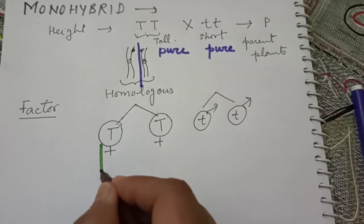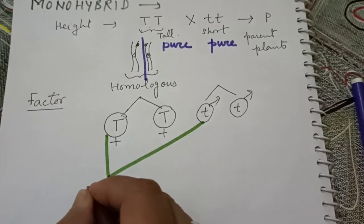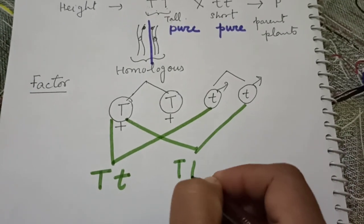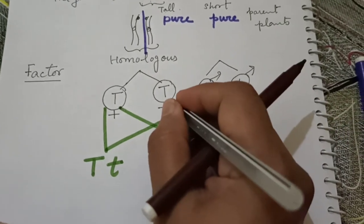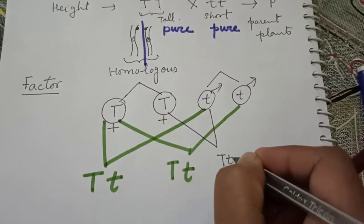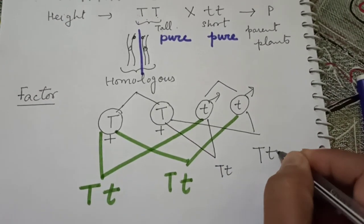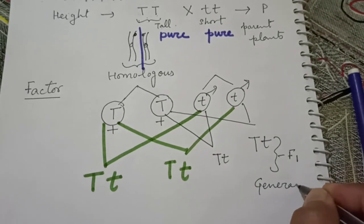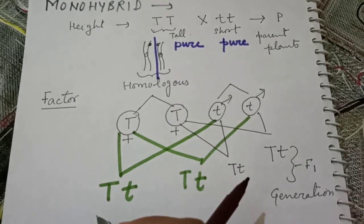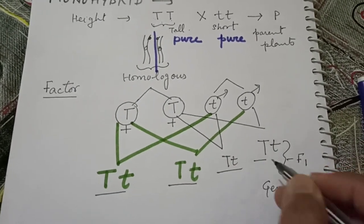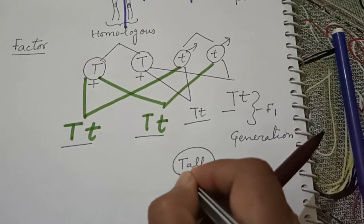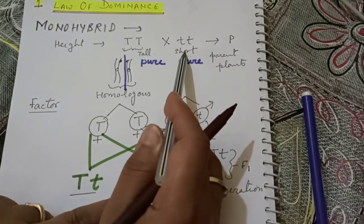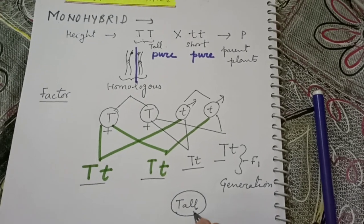Now a cross is made — one female gamete with one male gamete gives capital T and small t. All four possible combinations result in capital T and small t. This generation is termed the first filial generation, or F1 generation. All these F1 plants are tall, so even though a cross was made between a tall and a short plant, in the F1 generation only one trait — tall — is visible, and the recessive trait is hidden.